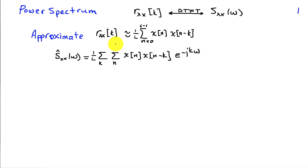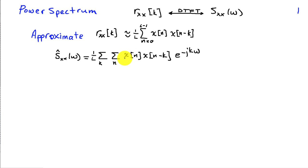So if we plug this approximation for the correlation sequence into the discrete time Fourier transform, we have a double sum: a sum over k times a sum over n of x of n times x of n minus k, times e to the minus j k omega.